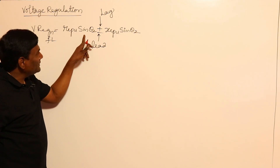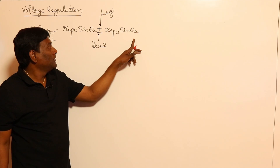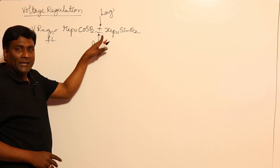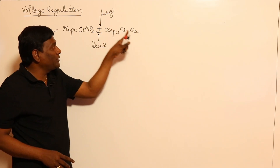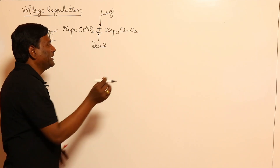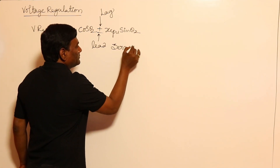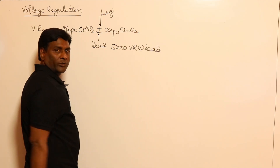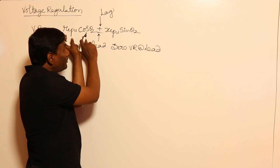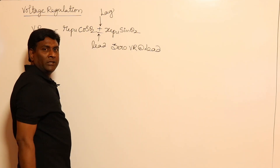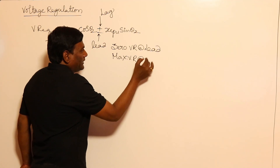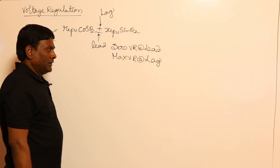If we consider the minus sign, Re_pu * cos(θ₂) can equal Xe_pu * sin(θ₂), giving zero voltage regulation. So zero voltage regulation occurs at leading power factors only. For the plus sign, maximum voltage regulation can occur, and this happens at lagging power factors only.